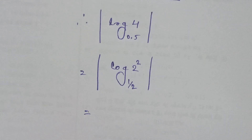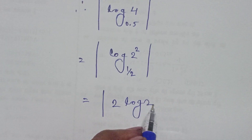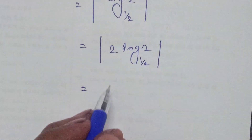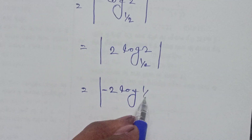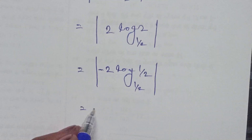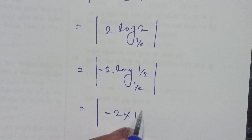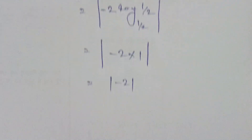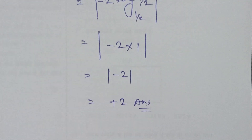So we have log₂ with base 1/2. This is equal to -log(1/2) with base 1/2. Since the base and the value are equal, the value of that log is 1, giving us -(-1) = 2. So 2 is the right answer.